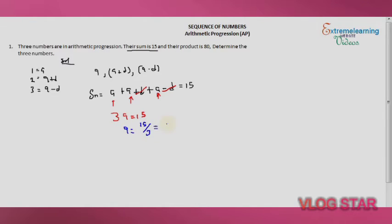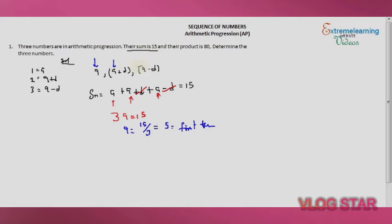Dividing both sides by 3 gives us a equals 5. So the first term is 5. The most important thing here is to get the first term first, because it appears in all three numbers. Now the next thing is to find the product of the numbers.